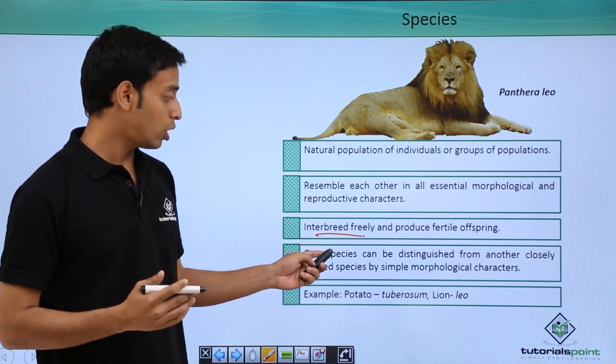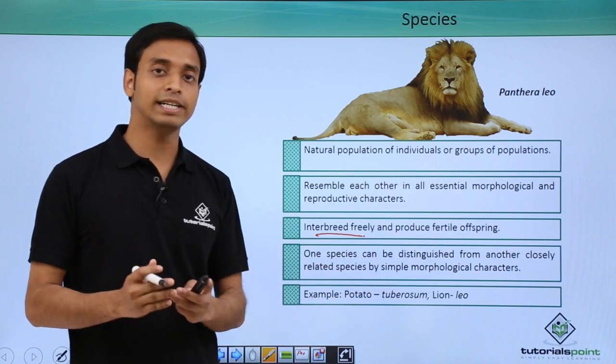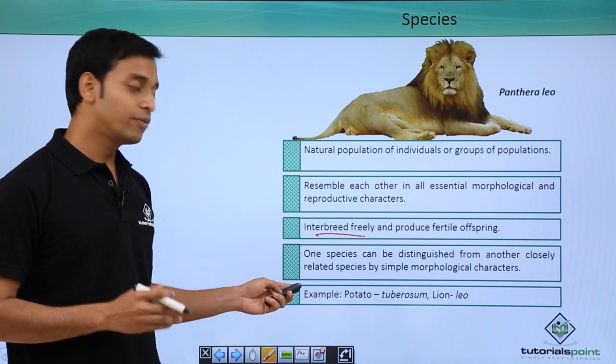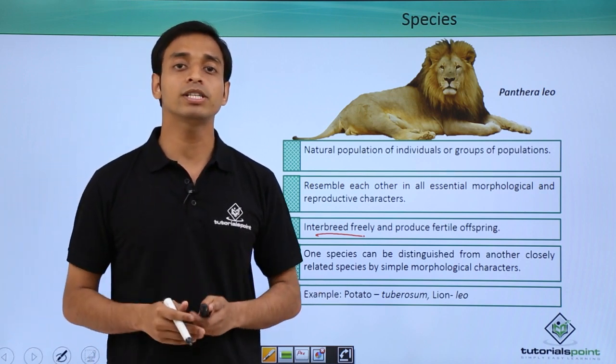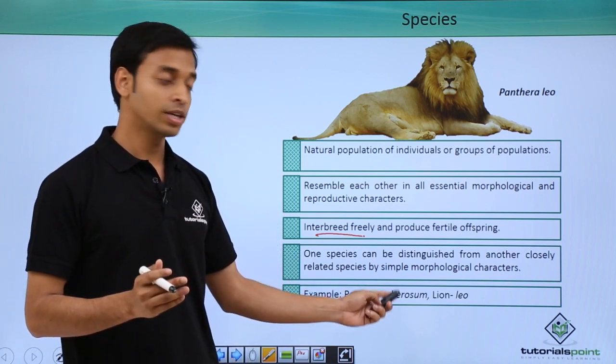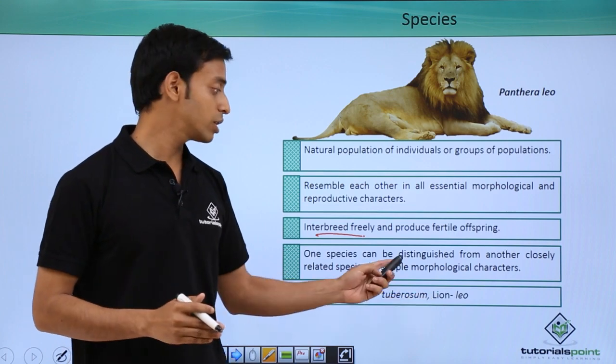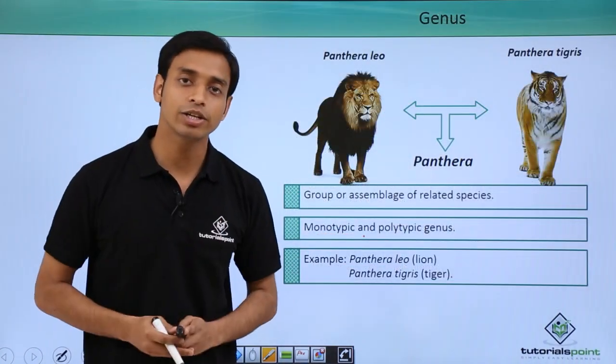We can take an example like potato. Its scientific name is Solanum tuberosum, the species is tuberosum. We will also talk about lion, which is Panthera leo. Leo, as we can see, is the species.